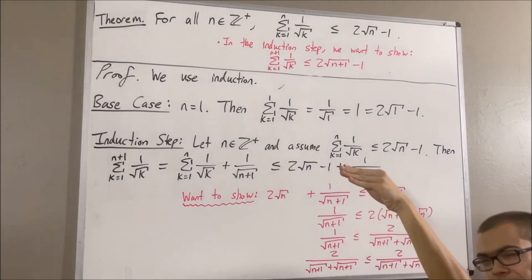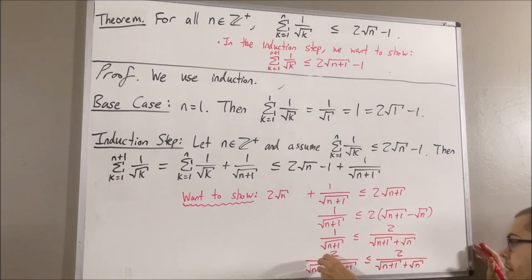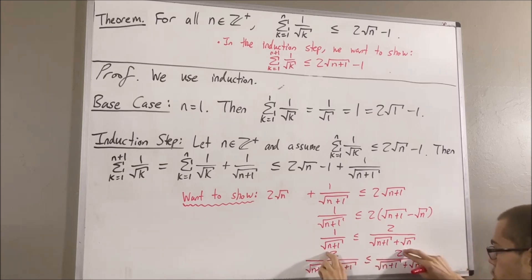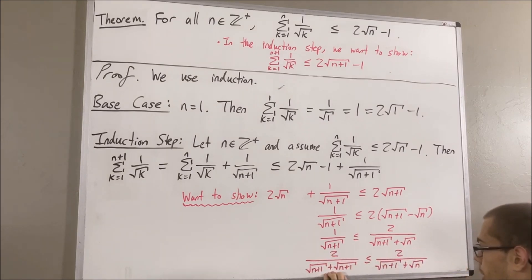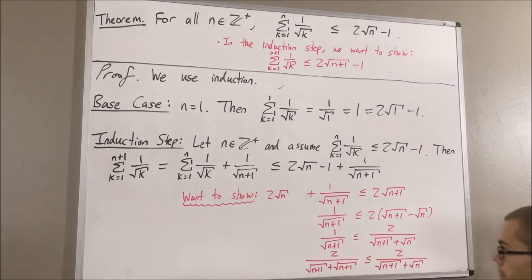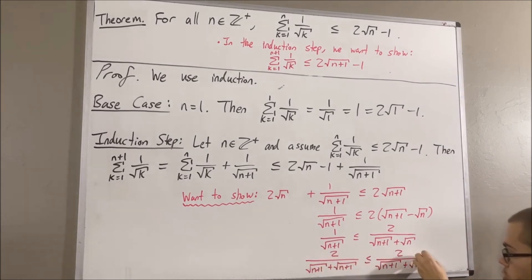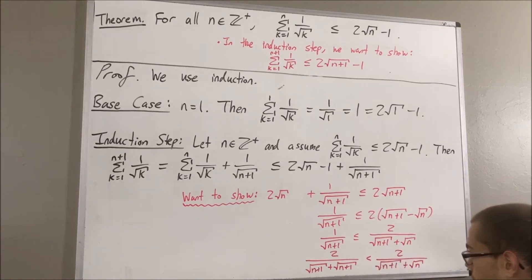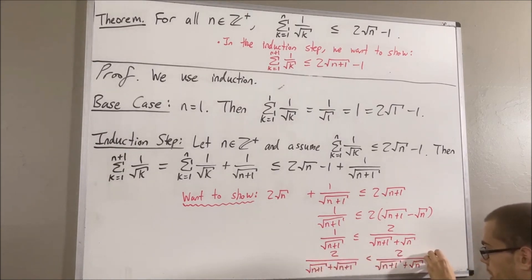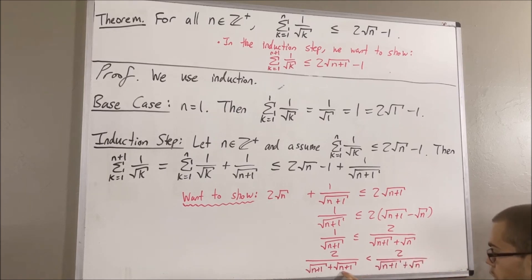Intuitively, it seems clear that this inequality is true because the numerators are equal and the denominator on the right is greater than the denominator on the left, so it will in fact be strictly less than. The reason we know this inequality is true is that n plus 1 is greater than n.